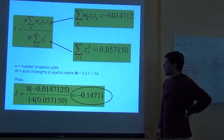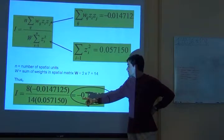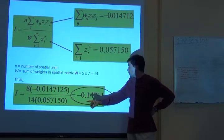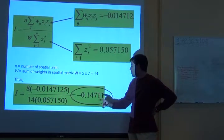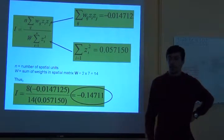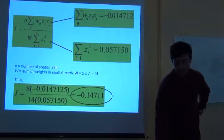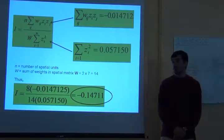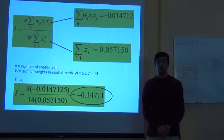And then, here is our Moran's I. Minus negative 0.14711. What does that mean? That's what really matters. Doing the math is not biology.